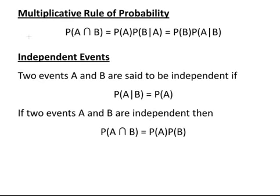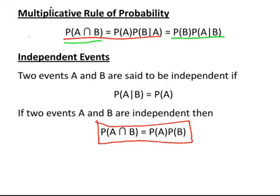Let's remind ourselves about some important rules. First, we'll look at the multiplicative rule of probability, which is just a rearrangement of the conditional probability rule. The main thing about the multiplicative rule is that it gives us the rule for independent events. So we have two events A and B, and they are said to be independent if the probability of A given B equals the probability of A. Importantly, that means the probability of A and B is the probability of A times the probability of B.